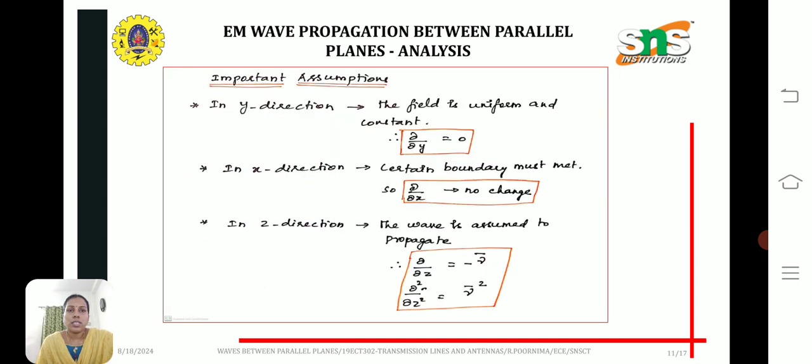The other assumptions are: in the y direction, the field is uniform and constant, so del by del y equal to 0. In x direction, certain boundary conditions must be met. In z direction, the wave is assumed to propagate, so del by del z equal to minus gamma.